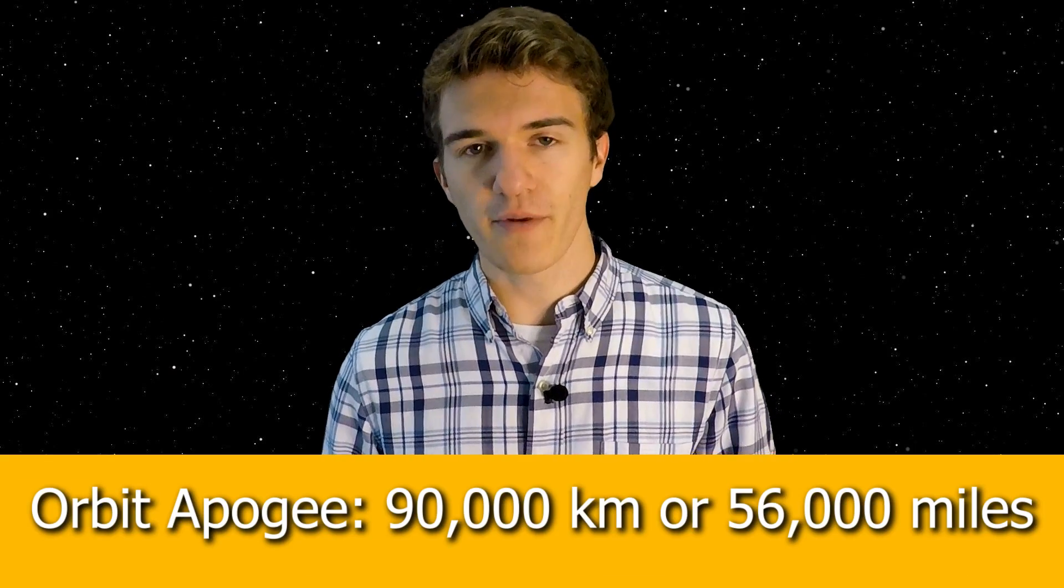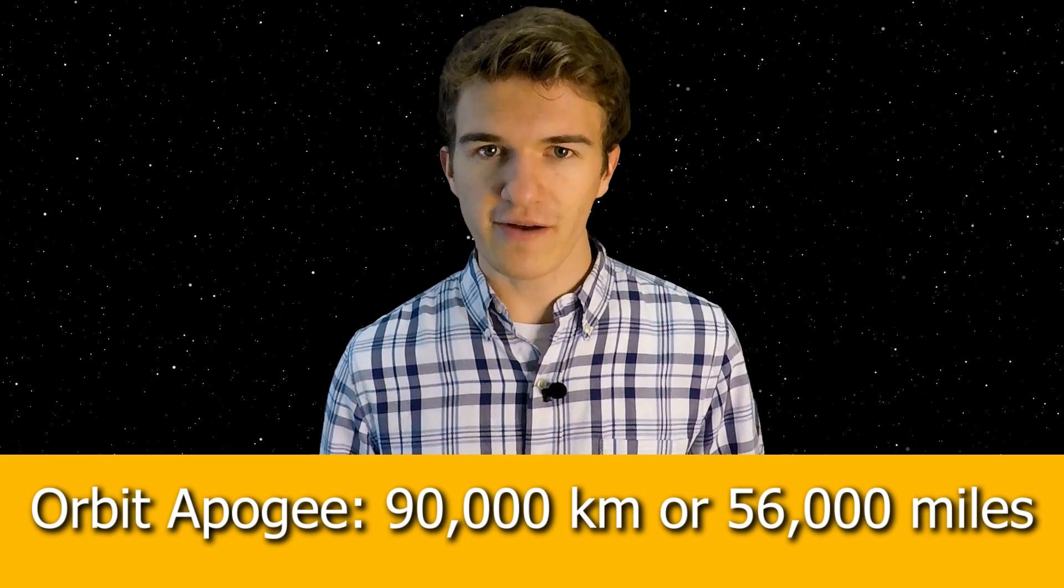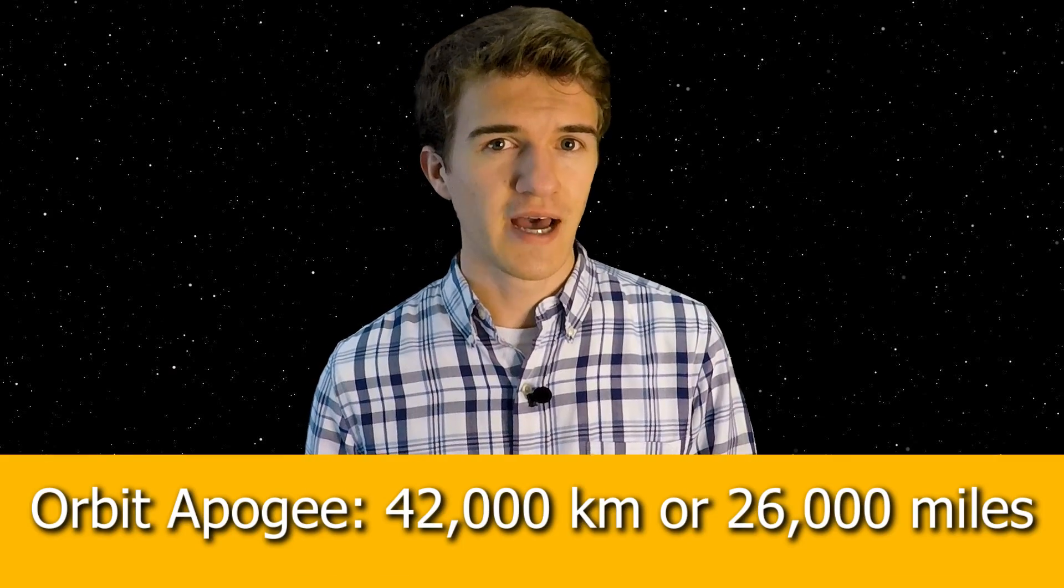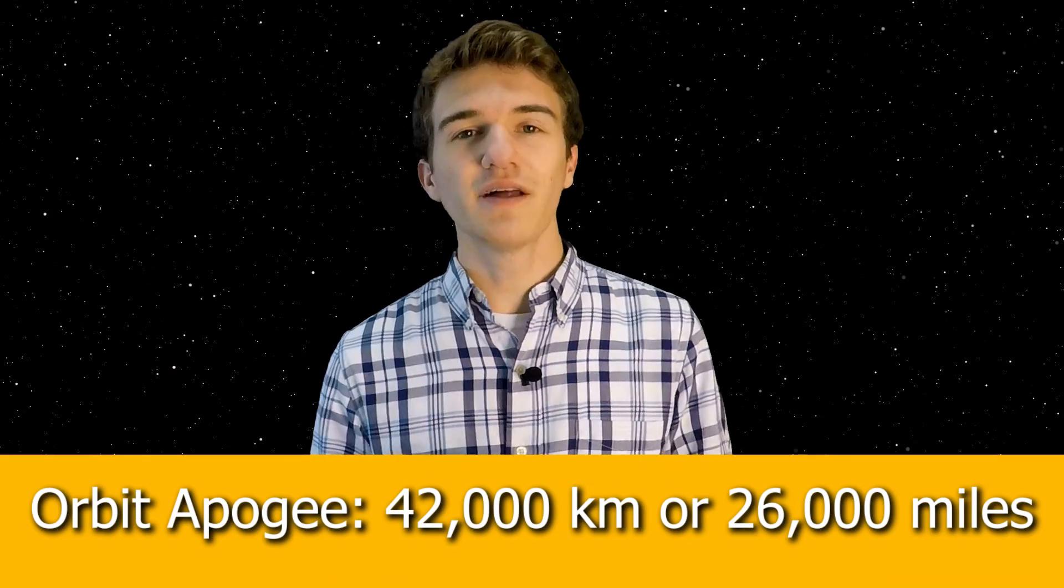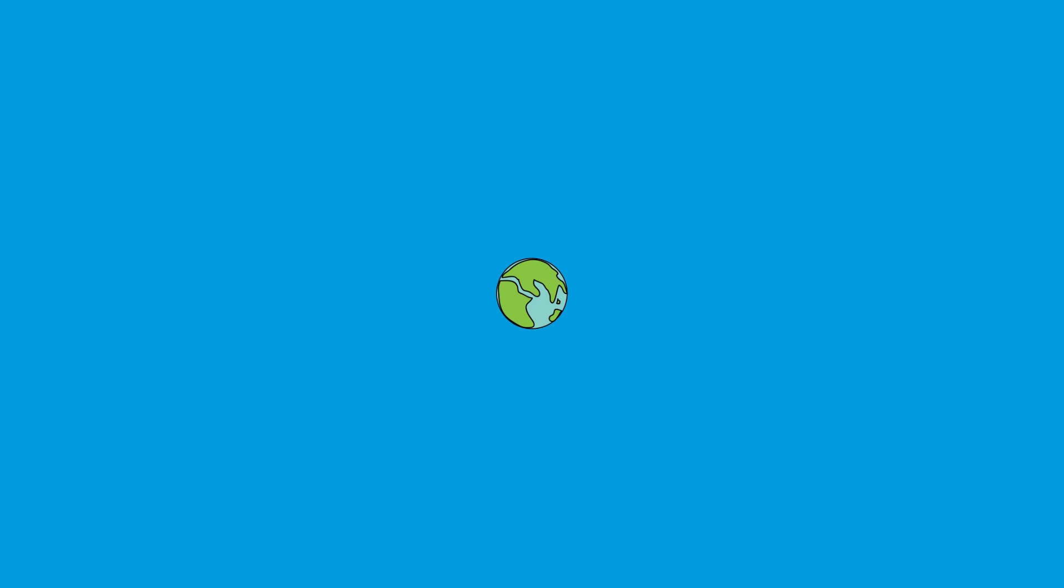And while I was watching the live stream, I noticed that one of the broadcasters mentioned the orbit that it's going to, and it was very briefly. He said it was a geostationary transfer orbit with an apogee of 90,000 kilometers. But that number stood out to me. Because a typical geostationary transfer orbit doesn't have an apogee of 90,000 kilometers. It has an apogee of around 42,000 kilometers.